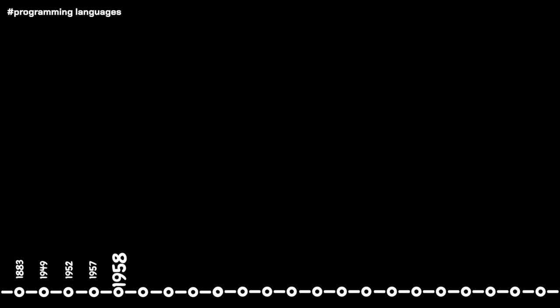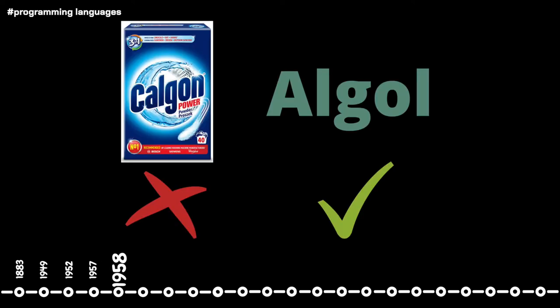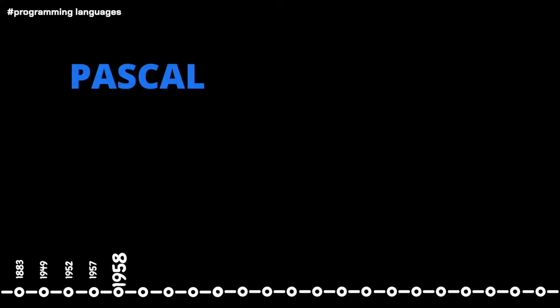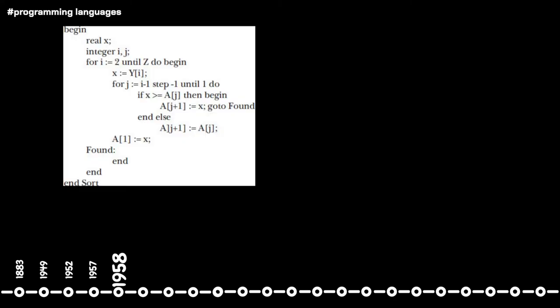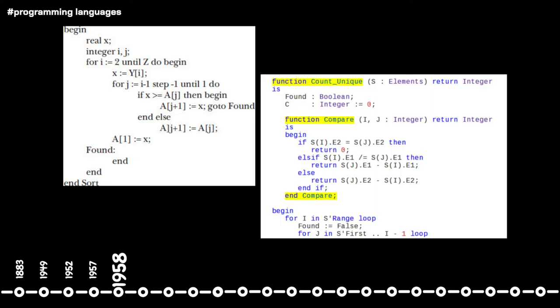Just one year later, in 1958, ALGOL was created. ALGOL, meaning algorithmic language, was a basis for languages like Pascal, C, C++ and Java. Most modern languages have syntax inspired from ALGOL, and it is considered to be among the most influential early programming languages, introducing code blocks with beginning and end delimiters. ALGOL was also the first language to implement nested function definitions with lexical scoping.